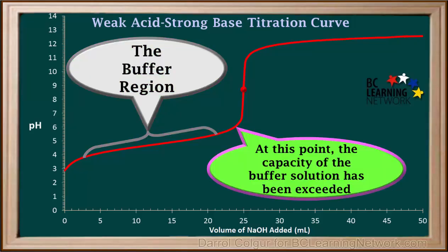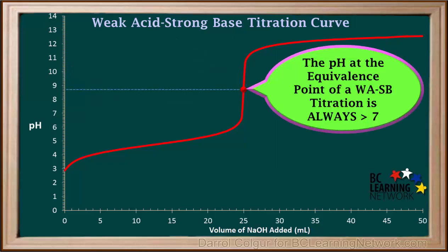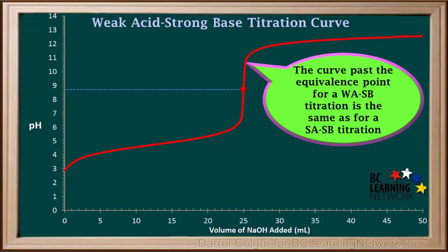At this point, the capacity of the buffer solution has been exceeded and the pH starts rising rapidly as more base is added. The almost vertical section of a weak acid-strong base titration curve is shorter than the one found in a strong acid-strong base titration curve. One of the most important aspects is that the pH of the equivalence point is always greater than 7. The salt formed when a strong base neutralizes a weak acid is always a basic salt. Once we move past the equivalence point to where the base is in excess, the curve is identical to that found in a strong acid-strong base titration curve — the pH increases quickly at first, then the change becomes quite gradual.